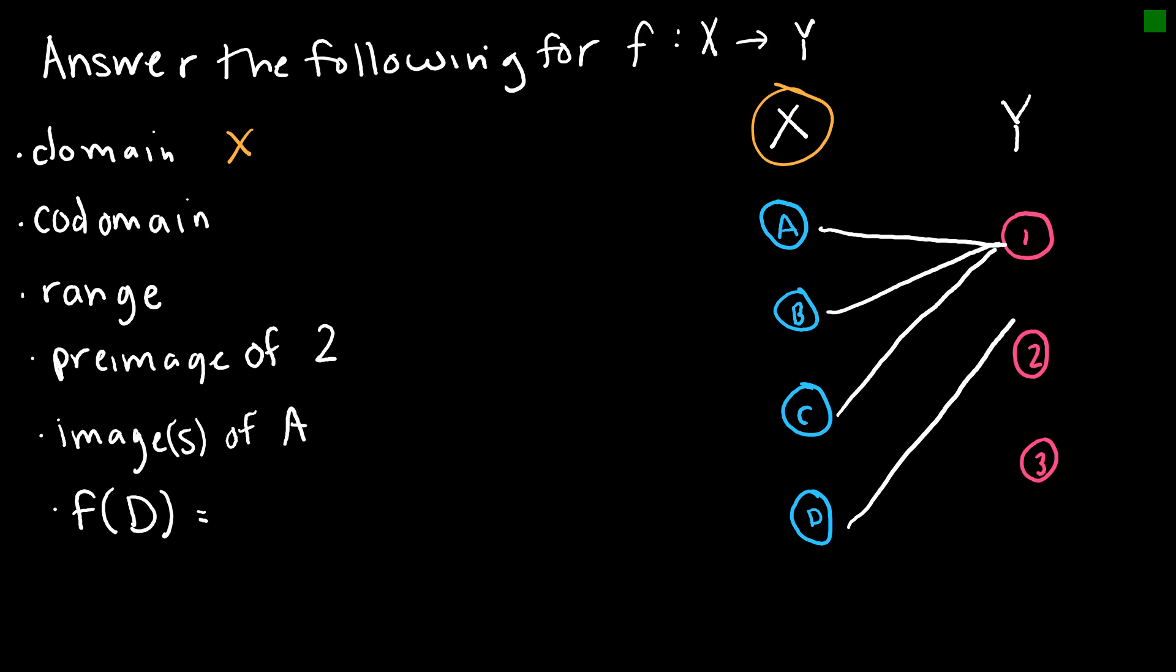The codomain would be set Y, which is all of the values in that codomain. The range would be only the values of 1 and 2, so the set of values containing 1 and 2. The preimage of 2 says what value mapped to 2, and then we can see here that that would be D.